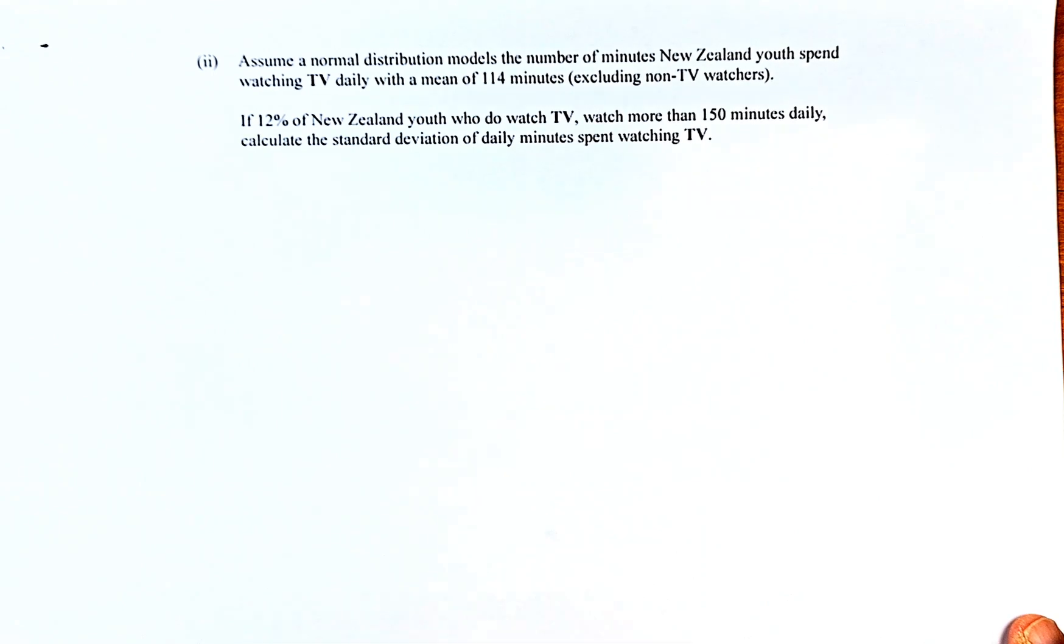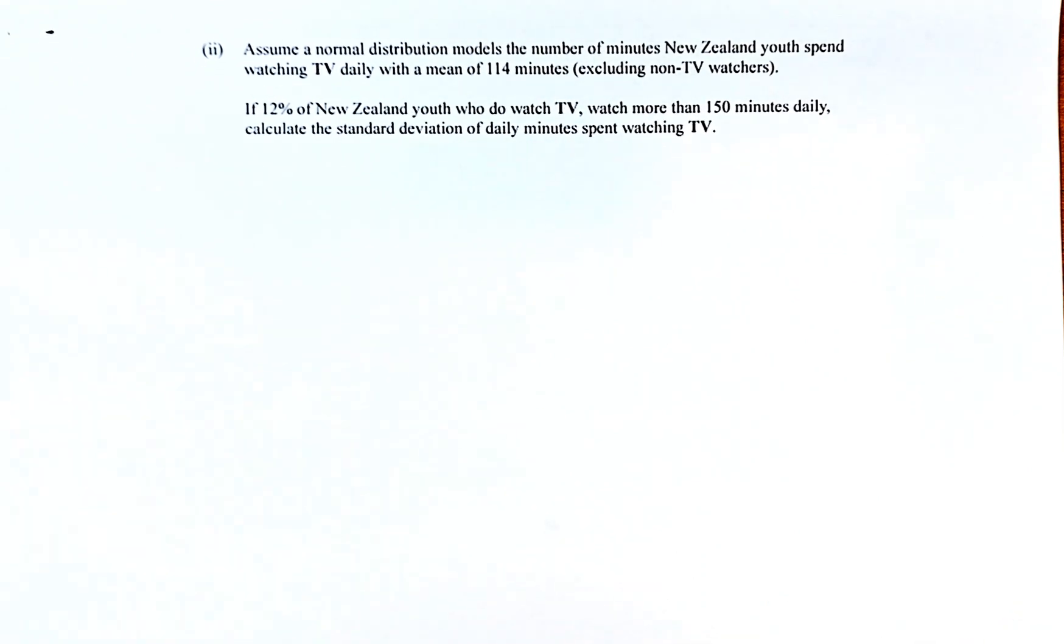Let's do the question. So assume a normal distribution models the number of minutes New Zealand youth spend watching TV with a mean of 114. If 12% of New Zealand youth watch more than 150 minutes daily, calculate the standard deviation of daily minutes spent watching TV. So whenever they ask you to calculate mean or standard deviation, you need to standardize the equation and then get the Z value. And from the Z value, you substitute into the equation to solve this.